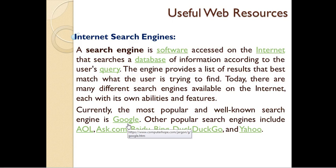Specialized search engines focus on research articles, books, etc. These specialized search engines are available within their own domains. If you use a different method, Google can also find this information.